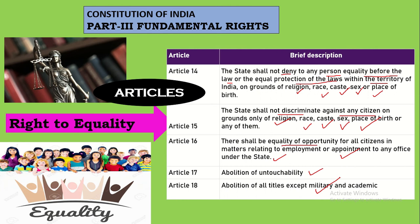To summarize: Article 14 — the state shall not discriminate against any individual. Article 15 — providing equal opportunity. Article 16 — equal opportunities for appointment to office under the government. Article 17 — abolition of untouchability. Article 18 — abolition of all titles except military and academic titles.